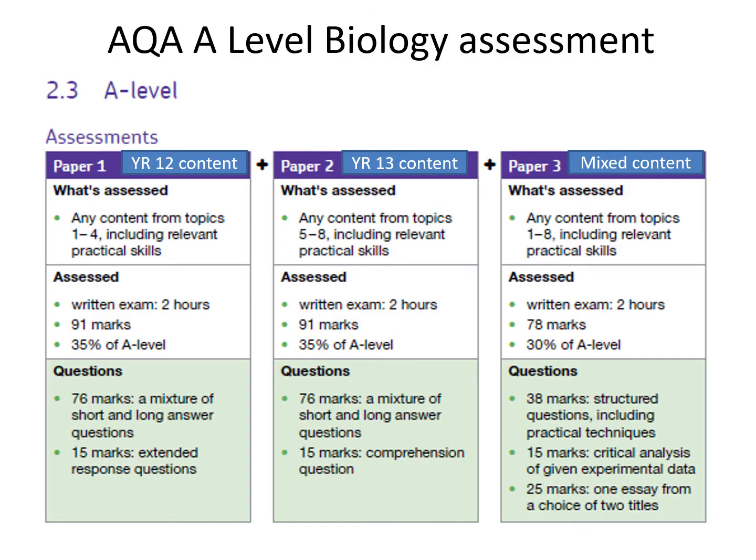One of the important aspects when choosing an A-Level course is obviously how you are going to be assessed. You can see here that the papers are split neatly into year content. Paper One is all the Year 12 content — the first four topics — and crucially all the papers are two hours long and carry nearly equal percentage splits. Paper One is worth 35% of your A-Level mark.